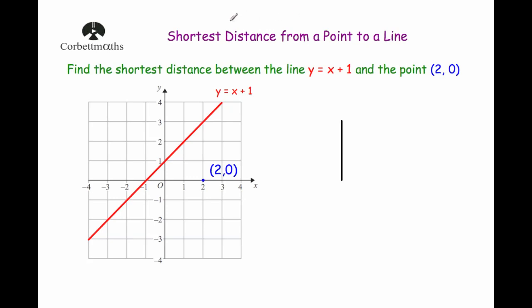In this video we're going to look at how to find the shortest distance from a point to a line. Here we've got the line y equals x plus 1 and we've got the point (2, 0), and we're going to look at how to find the shortest distance from this point to the line.